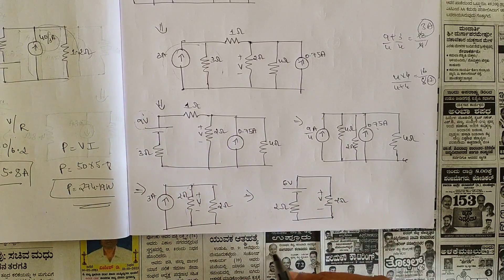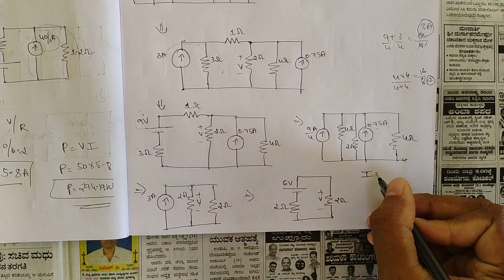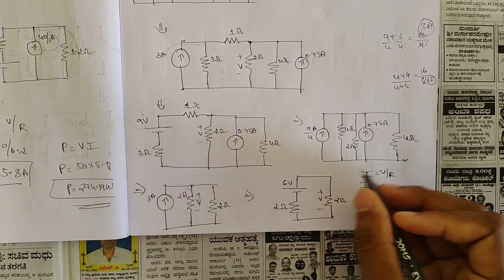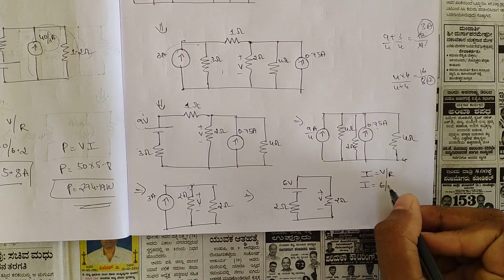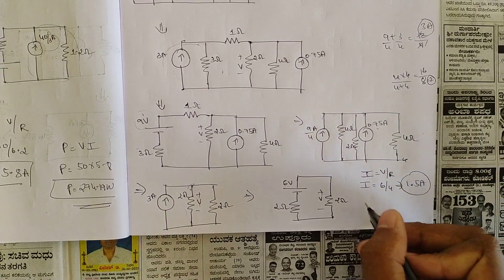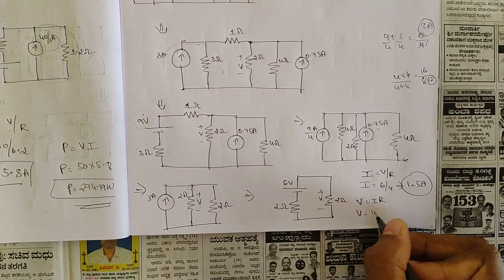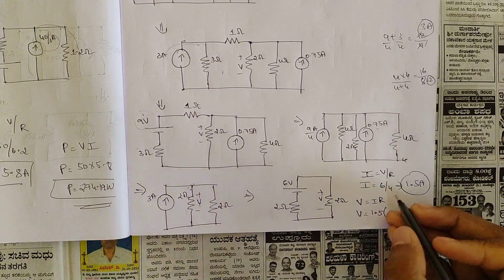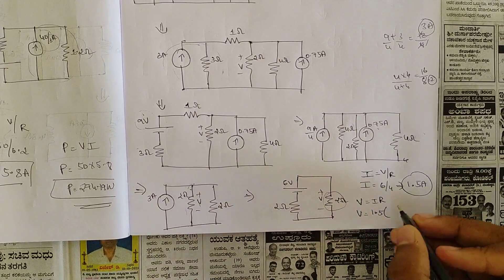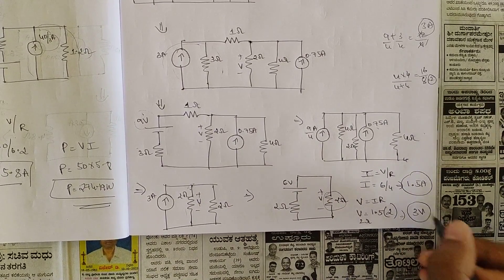Don't think that this 6 volt is the final voltage. First try to find the current: I = V/R = 6 volt divided by the equivalent resistance in series, which is 4. So 6/4 = 1.5 ampere. Now find the voltage: V = I × R = 1.5 × 2 ohm (across the 2 ohm resistance) = 3 volt.